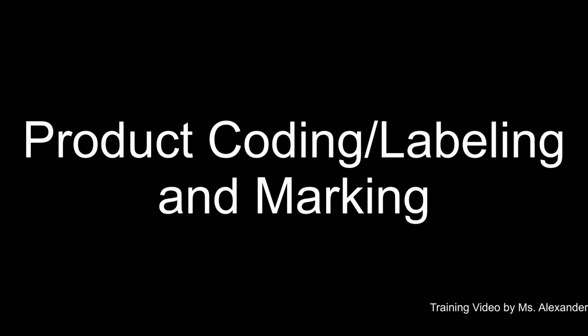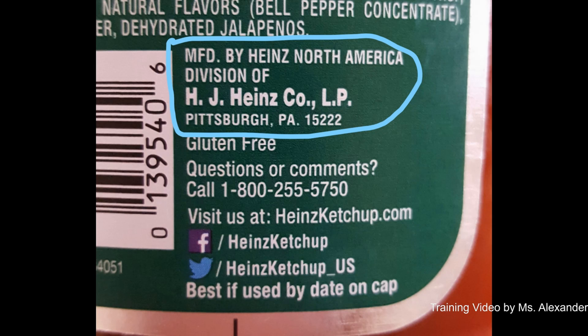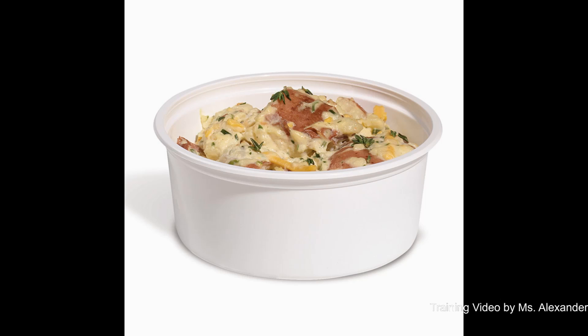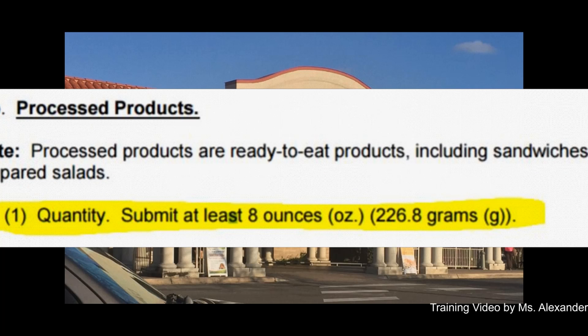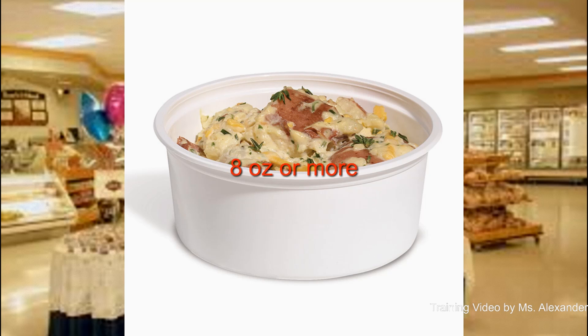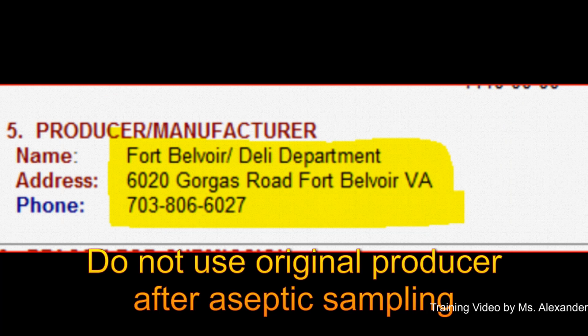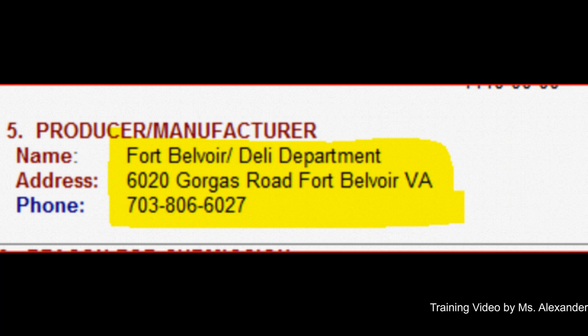There are varieties in how companies label their product. Mostly products are marked with 'distributed by' instead of 'manufactured by.' It is the submitter's job to decipher where the product comes from. Also an important note to remember in Block 5, Producer or Manufacturer, is the aseptic sampling of food from a bulk container to a smaller container. If the facility has 5 pounds of potato salad and the lab requires only 8 ounces, your facility will aseptically take 8 ounces or more of potato salad into a smaller container. In this case, instead of using the original producer, you will enter the facility's name and address in Block 5 because the facility personnel is the last person who handled the food.